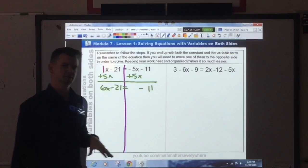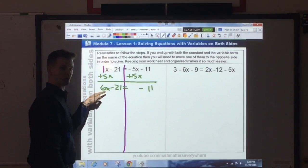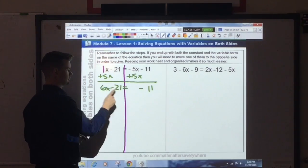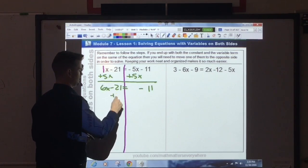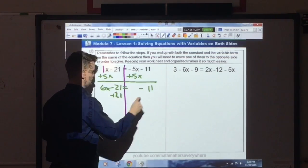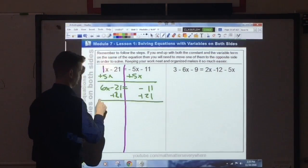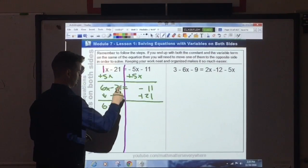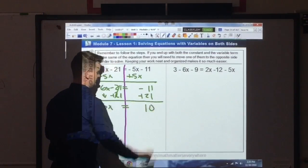Now that I'm here, I want to isolate this variable term on one side of the equation, so I must get rid of this constant. To do that, I add 21 to both sides. I bring down the 6x. That cancels. That's going to equal 10.